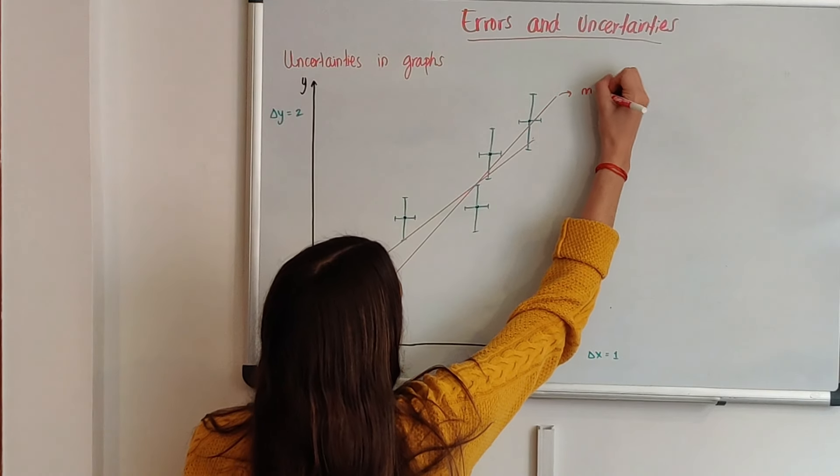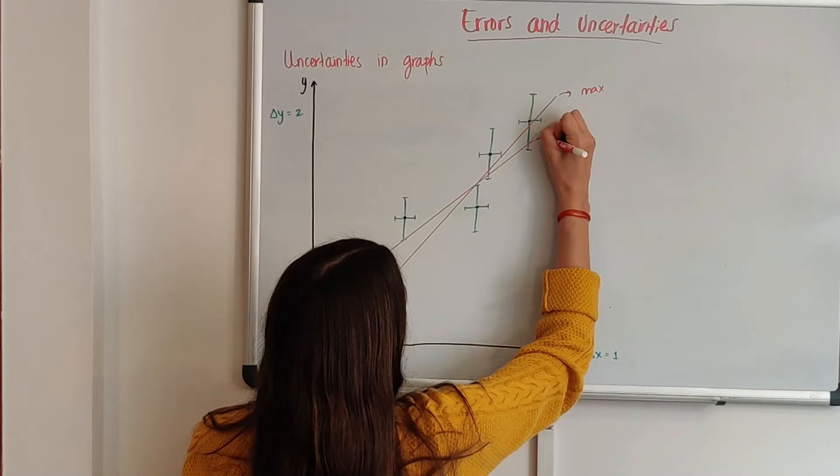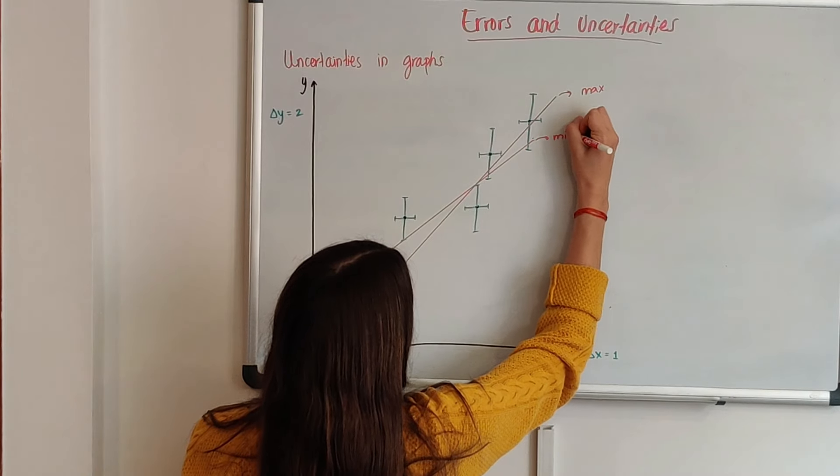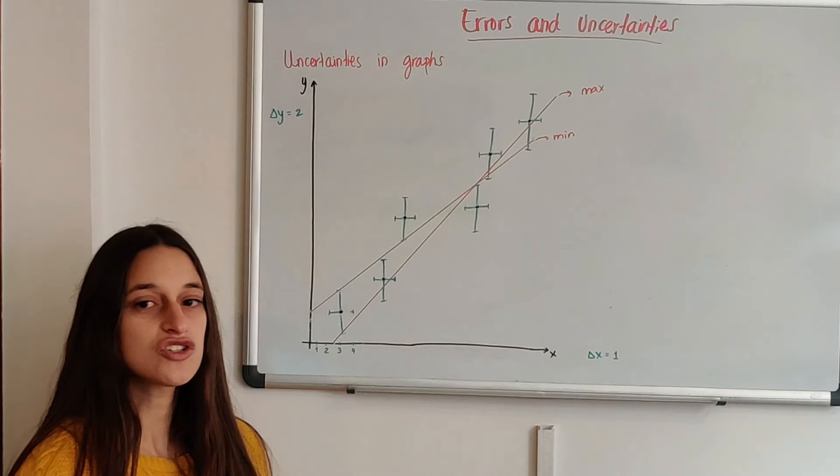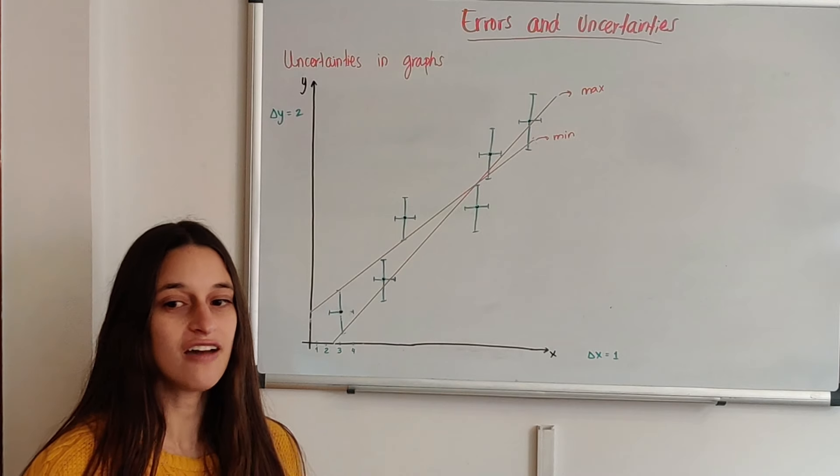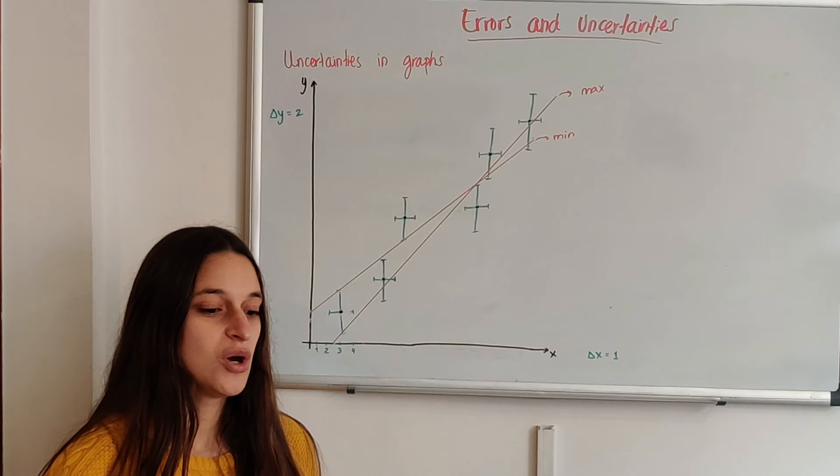Now I have a line of a maximum slope. Let's call this one max and this one min because it has the minimum slope.